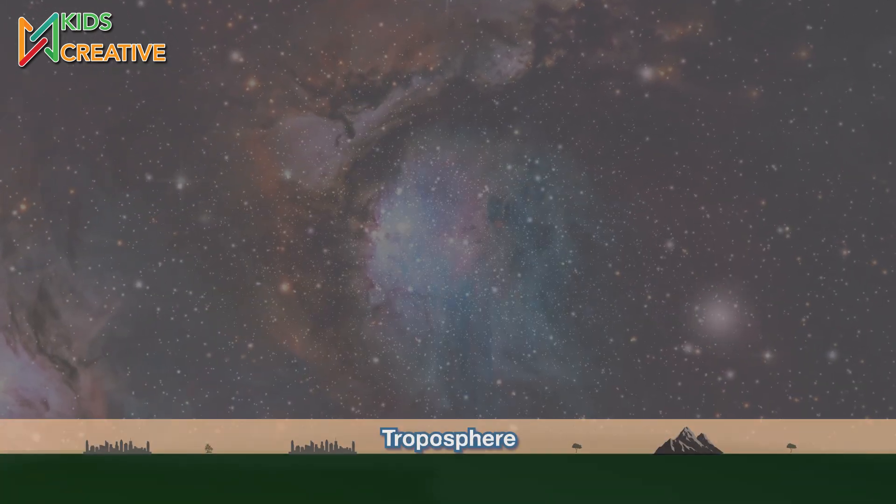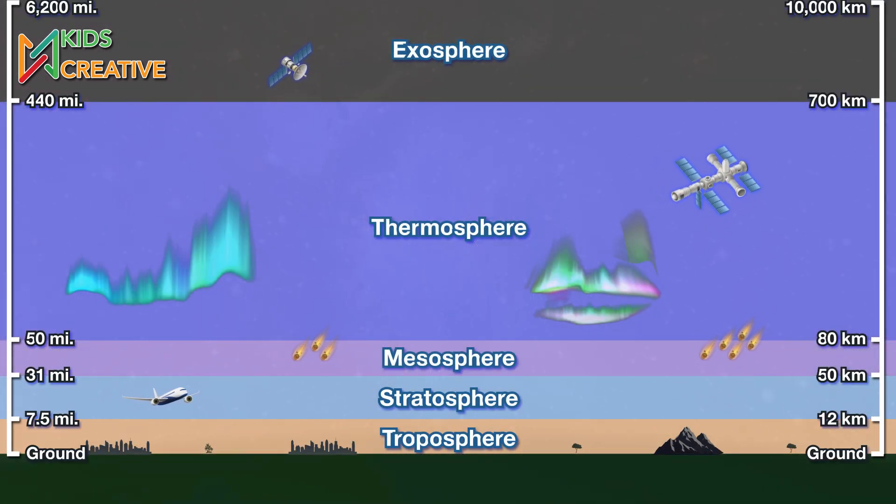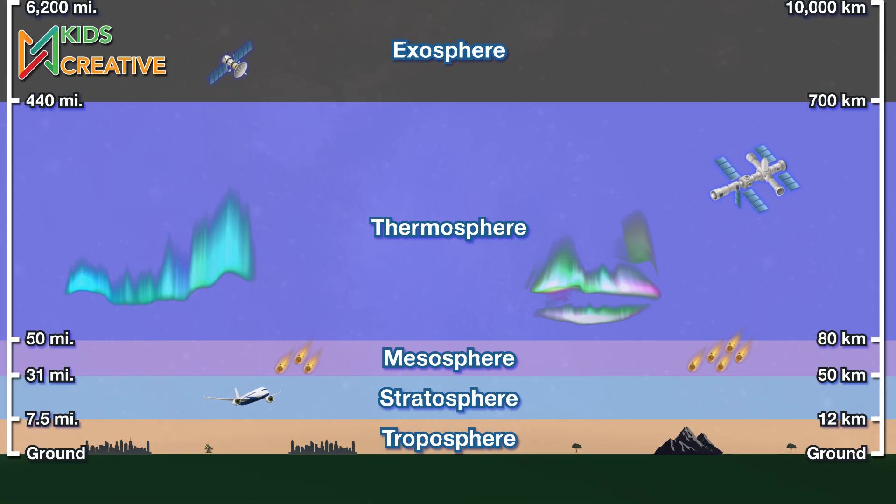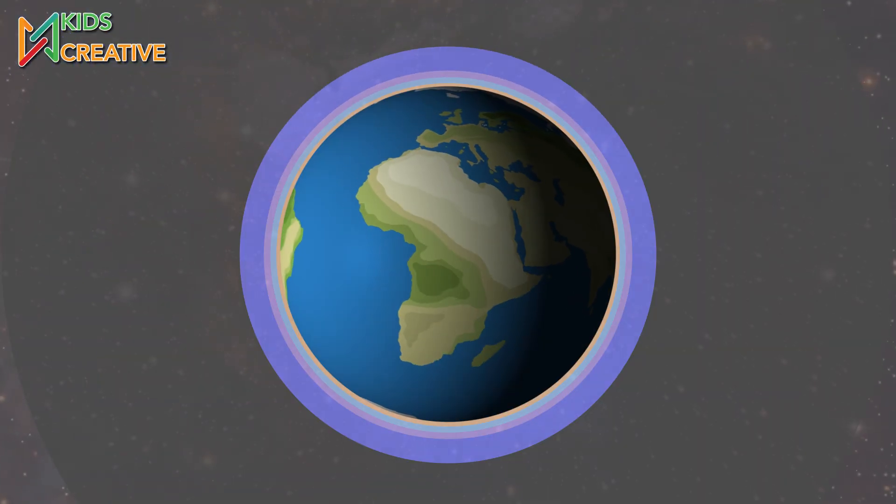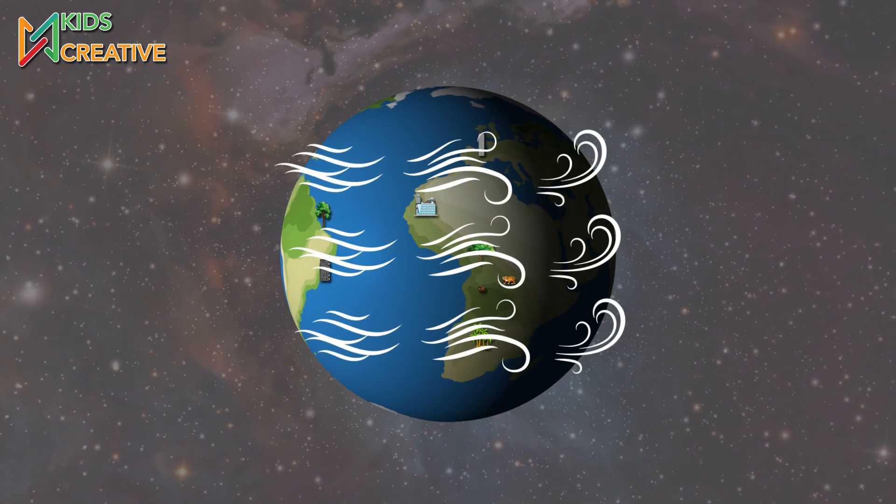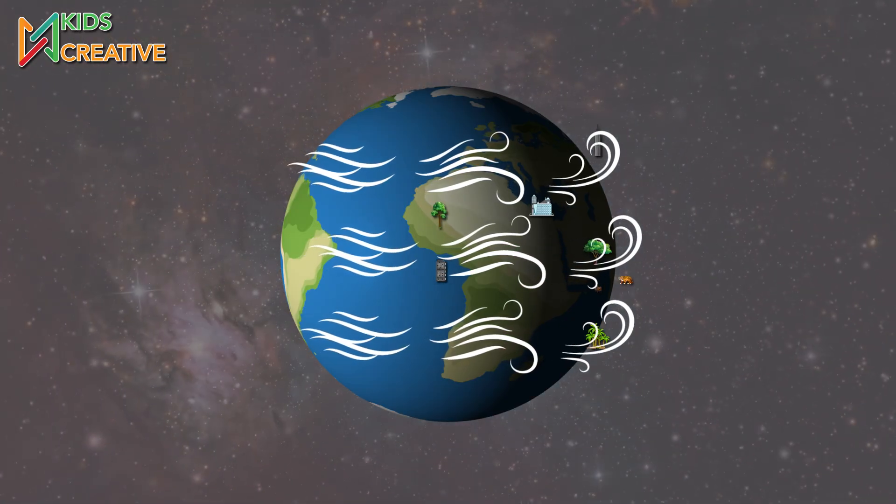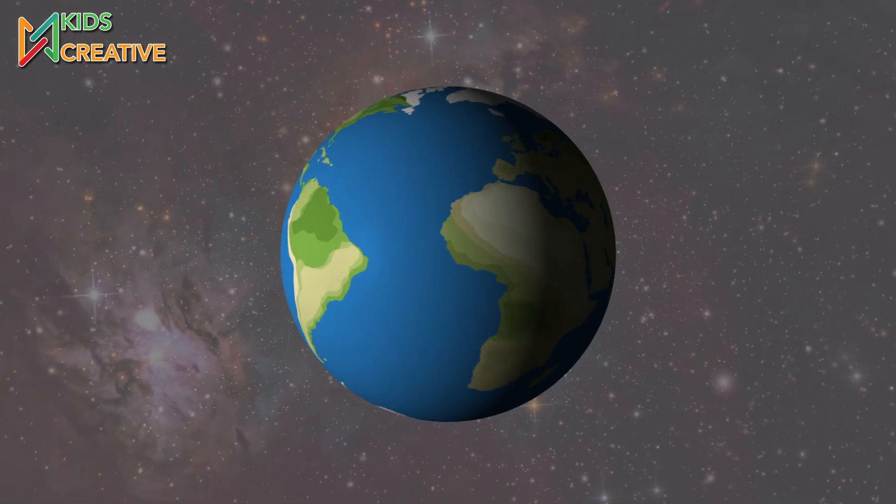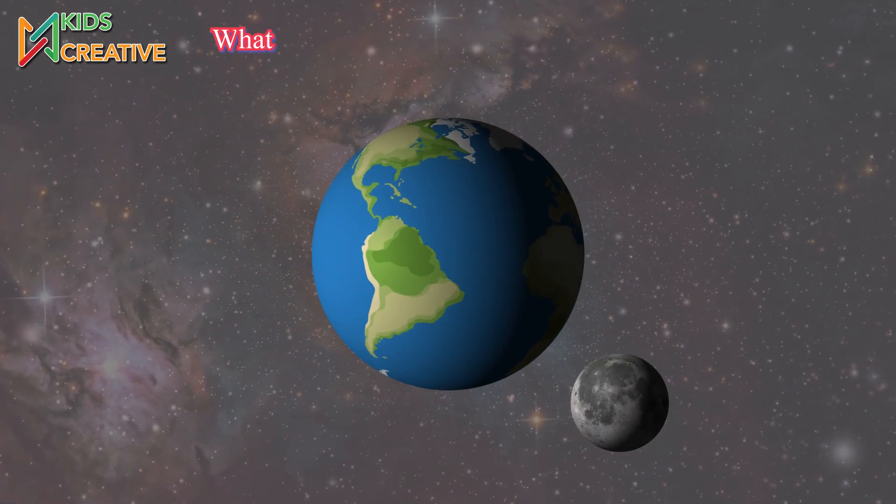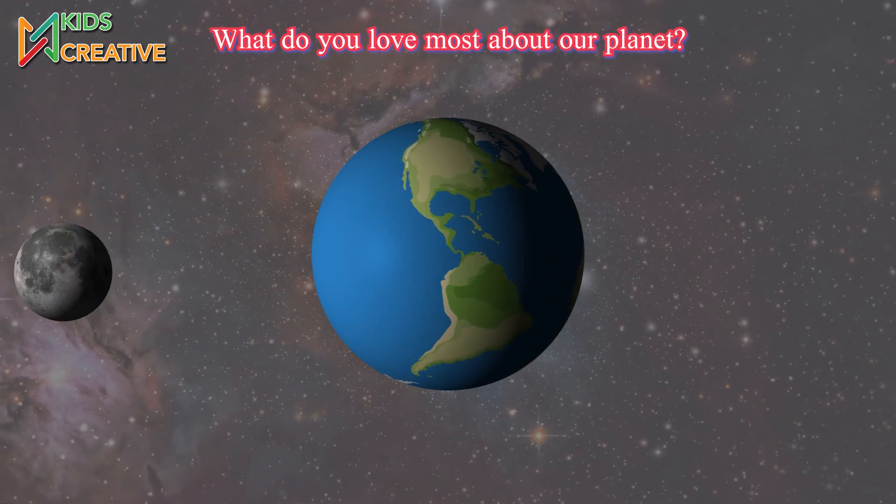It has five atmosphere layers, and the thermosphere is where the northern lights appear. If Earth suddenly stopped spinning, extreme winds would sweep everything away. Quick thought, what do you love most about our planet?